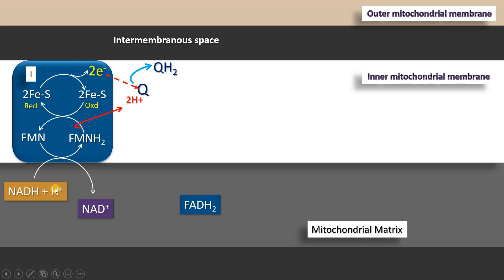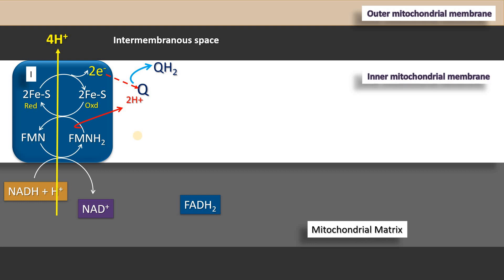While transferring electrons from one component to another within complex I, there is a release of energy. This energy pushes four protons from the mitochondrial matrix to the intermembranous space. This information is very important when we study oxidative phosphorylation, because these four protons actually make one ATP, as we will study in the next video. Complex I is also called NADH coenzyme Q oxidoreductase.